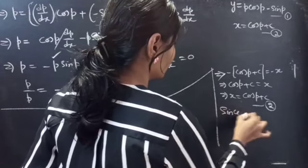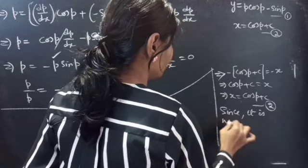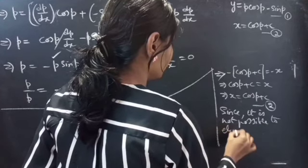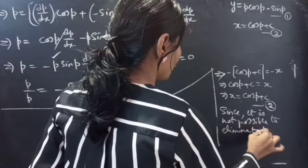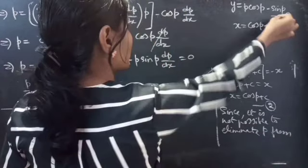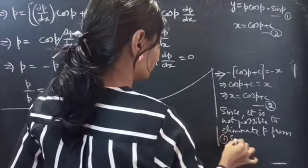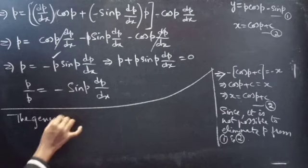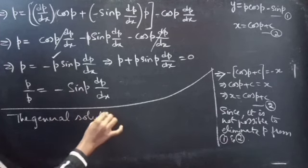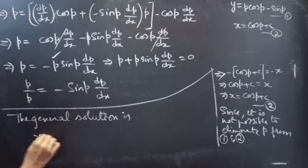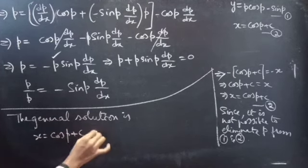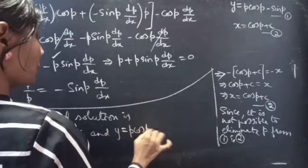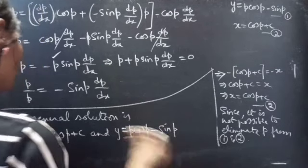Since it is not possible to eliminate P from equation 1 and equation 2, the general solution is: x equals cos(p) plus C, and y equals p·cos(p) minus sin(p), where p is considered as a parameter.